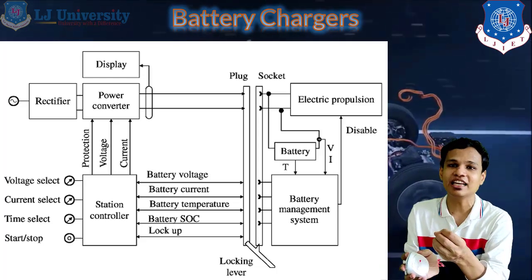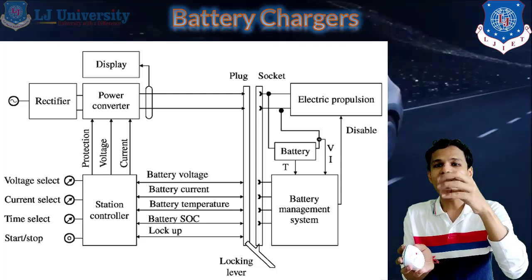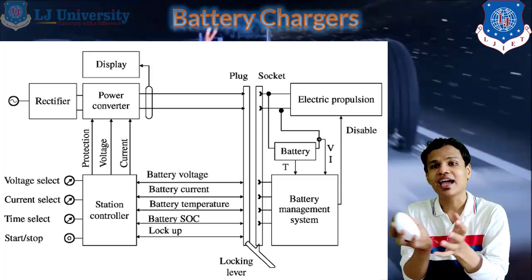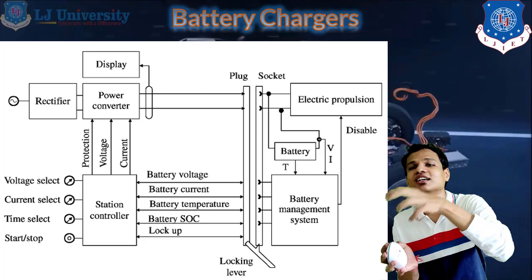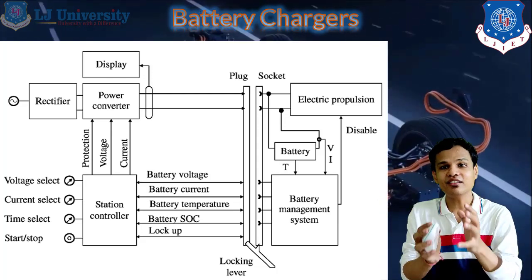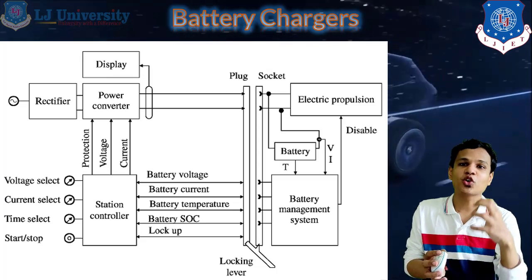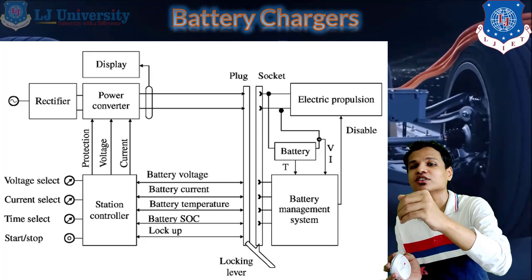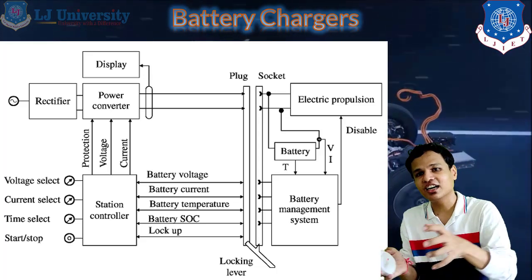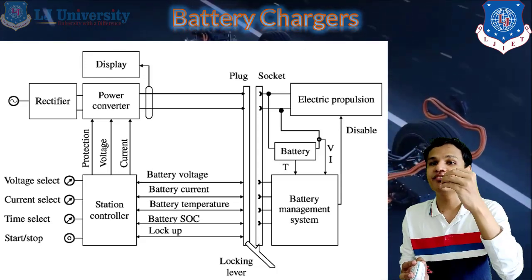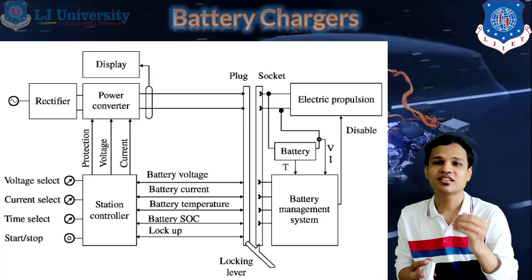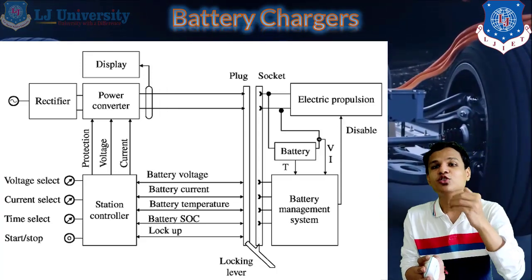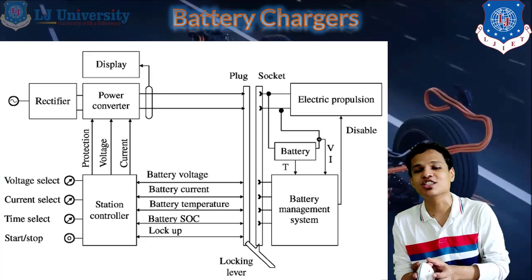Here you can see that the two parts are coupled with a locking lever. At the top, the plug is connected with the socket which is fitted in our battery management system. Until and unless the locking lever is in the locked position, the current will not flow from the charger to the battery system. After we apply the locking lever, the current will flow from our charger to the battery management system. This is how conductive charging works — the plug connects with the socket, and current flows into the battery, controlled by the battery management system.